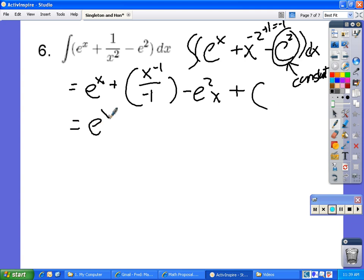To simplify this, we have e to x minus, because of the negative 1, negative x to the power of negative 1 minus e squared x plus c. And that's it. Now you know how to do indefinite integrals. Thank you for watching. Goodbye.